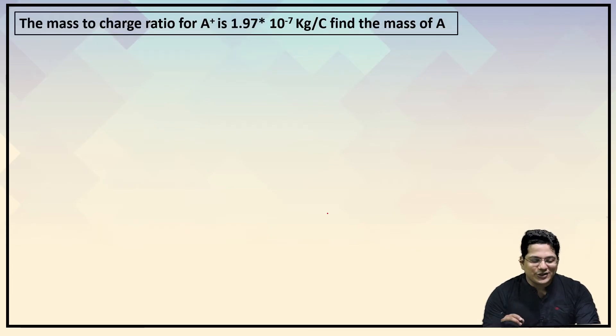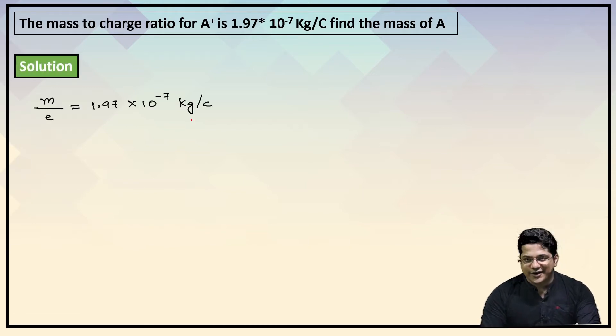Let's see the very first question. The mass-to-charge ratio—mind it, I have asked mass-to-charge ratio—for A⁺ is 1.97 × 10⁻⁷ kg per coulomb. Find out the mass of A. That's the question.